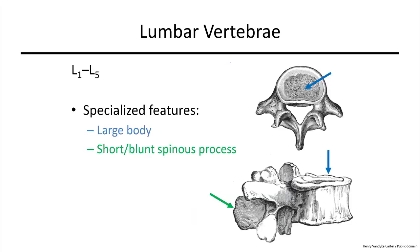There are five large lumbar vertebrae. These are larger in size than the cervical and thoracic vertebrae because they bear much more weight and have much larger muscles attached to them, allowing the upper body to bend in a number of directions. In addition, the spinous process is short and blunt rather than long and slender as in the other vertebrae.